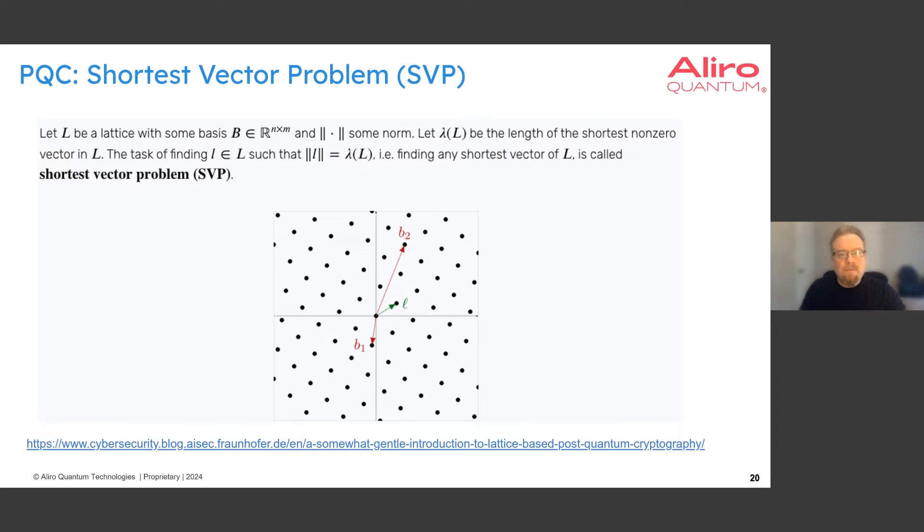So what is the shortest vector problem? Let's assume that we have some lattice, which is like a periodic structure that is created by the spanning of some basis vectors, B1 and B2. These are generally not orthogonal vectors. So the spanning of these vectors creates a lattice. And the question is, what is the shortest vector in this lattice? This seems like a simple problem, but given that these vectors are not orthogonal, this becomes a hard problem to compute.